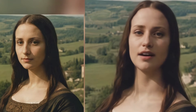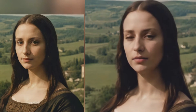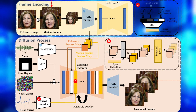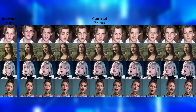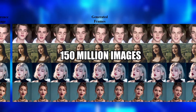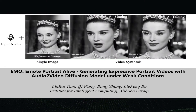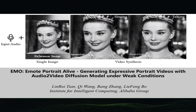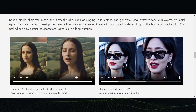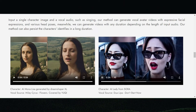To teach Emo how to do this, scientists gathered a huge collection of audio and video material. They amassed over 250 hours of footage and a staggering 150 million images. This diverse dataset includes all sorts of content like speeches, movie scenes, TV clips, and even singing performances in different languages. By exposing Emo to such a vast array of human expressions and vocal tones, researchers ensured it could understand and replicate a broad spectrum of emotions and styles.